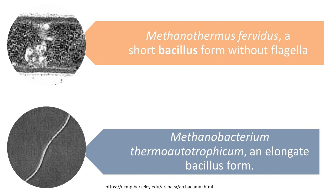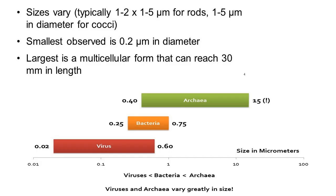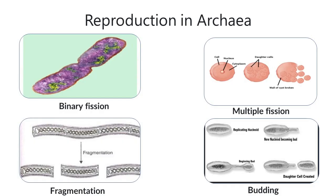They range in diameter from 0.1 to over 15 micrometres, and some filaments can grow up to 200 micrometres in length. Multiplication may be by binary fission, budding, fragmentation, or other mechanisms.